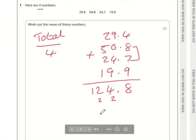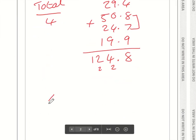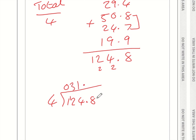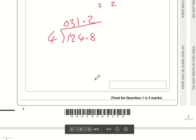The total is 124.8, and we're dividing that by 4 using the bus stop method. Put the decimal point above the decimal point. 1 divided by 4 can't be done, so put a 0 and move the 1 across. 12 divided by 4 is 3, 4 divided by 4 is 1, 8 divided by 4 is 2. So the mean is 31.2.